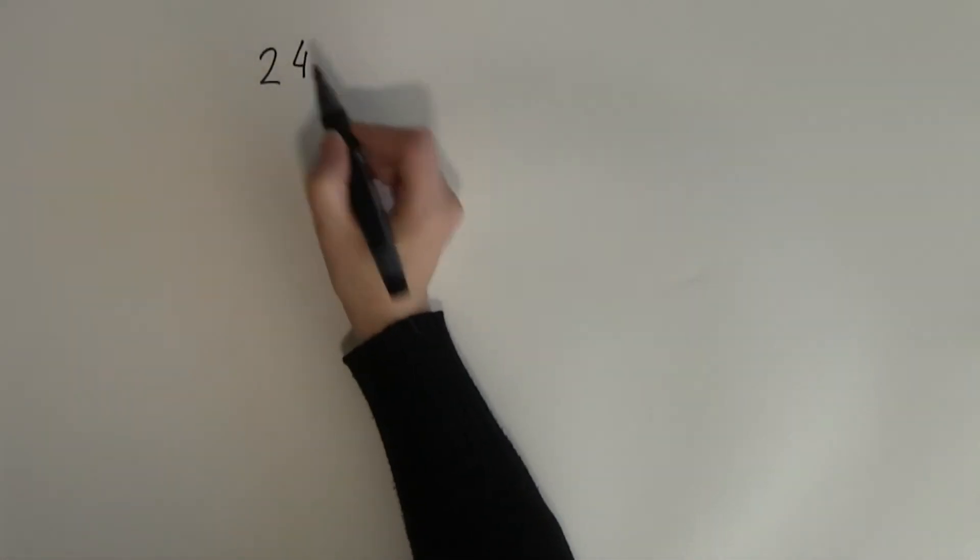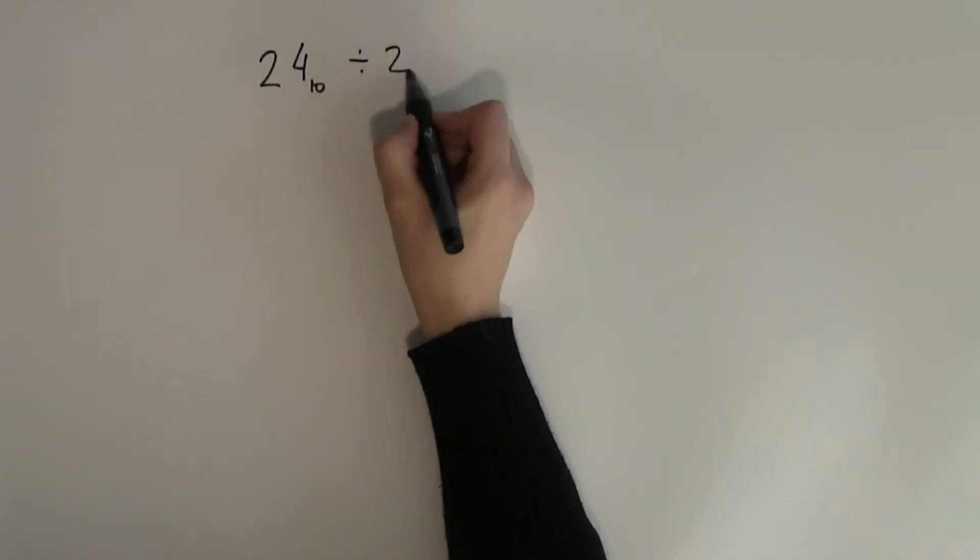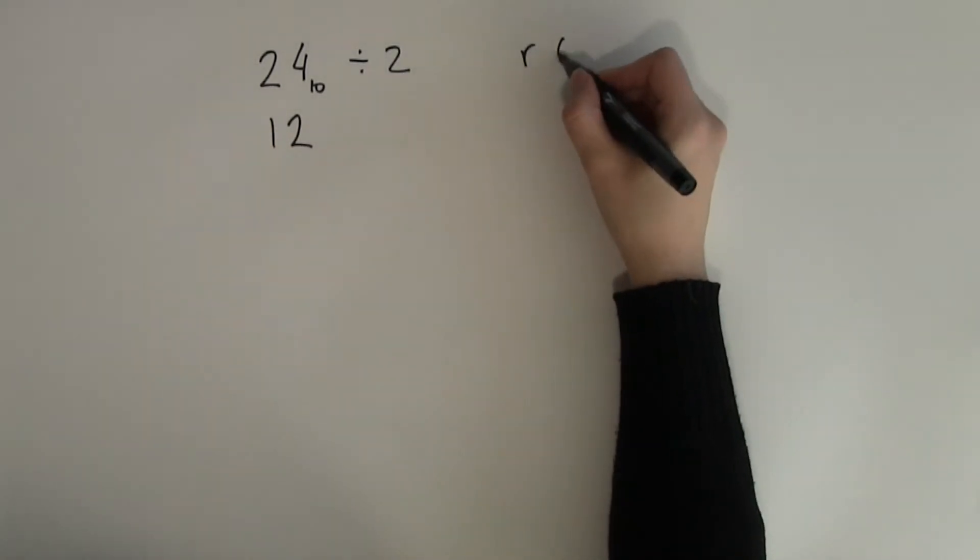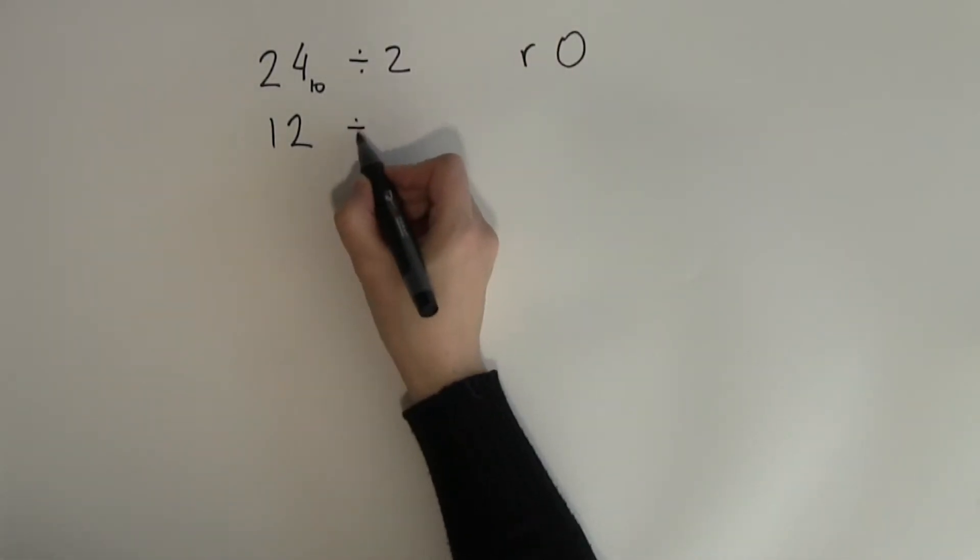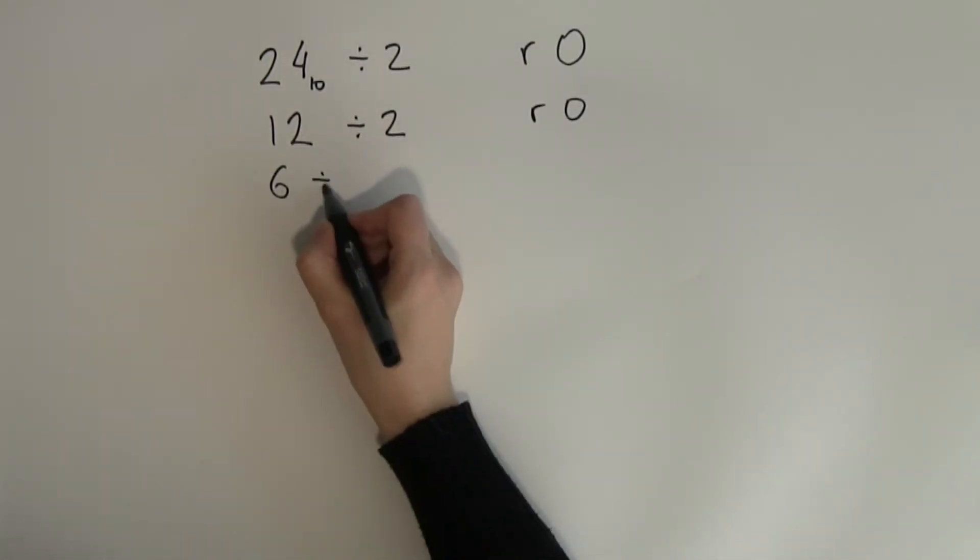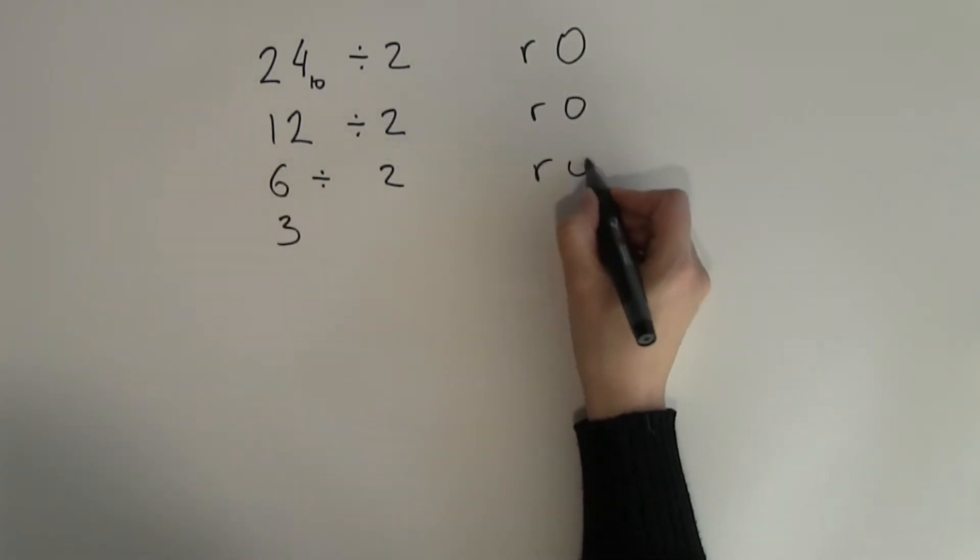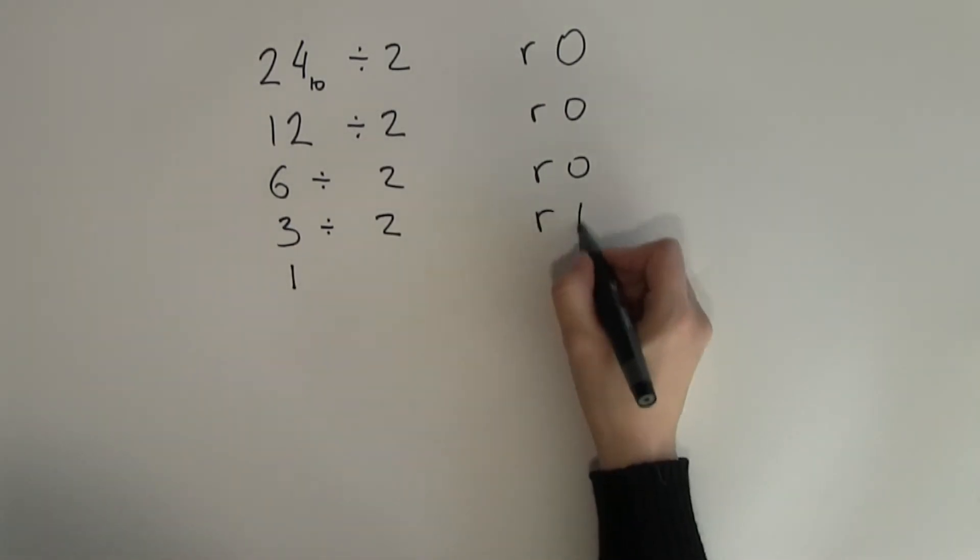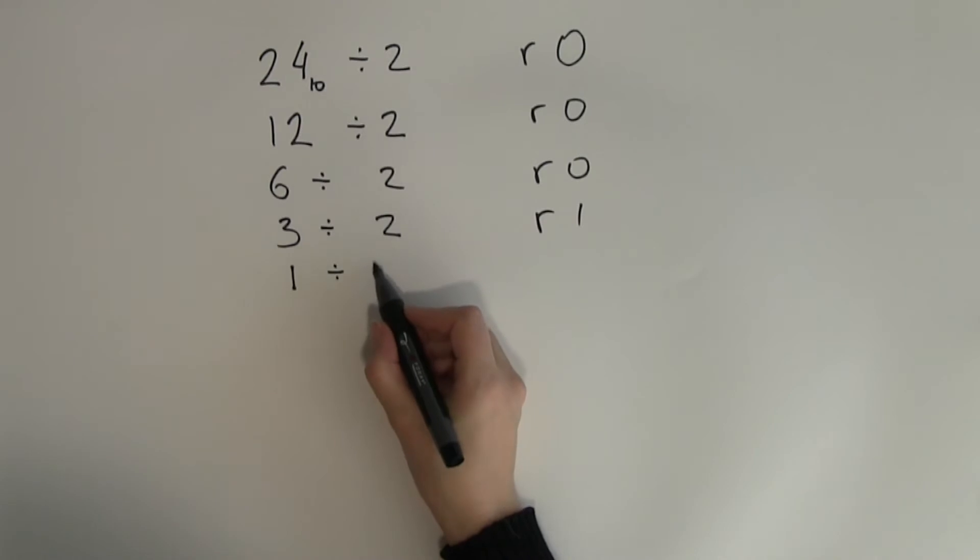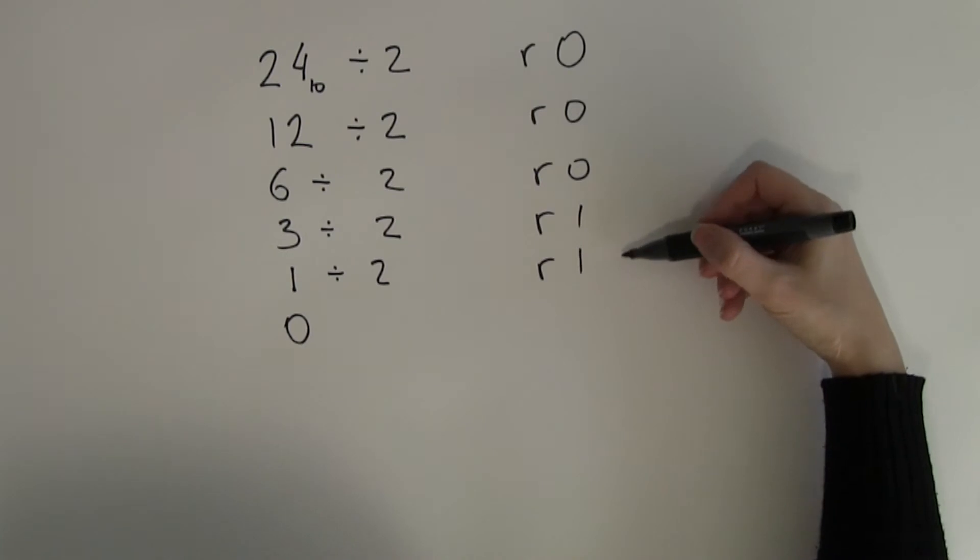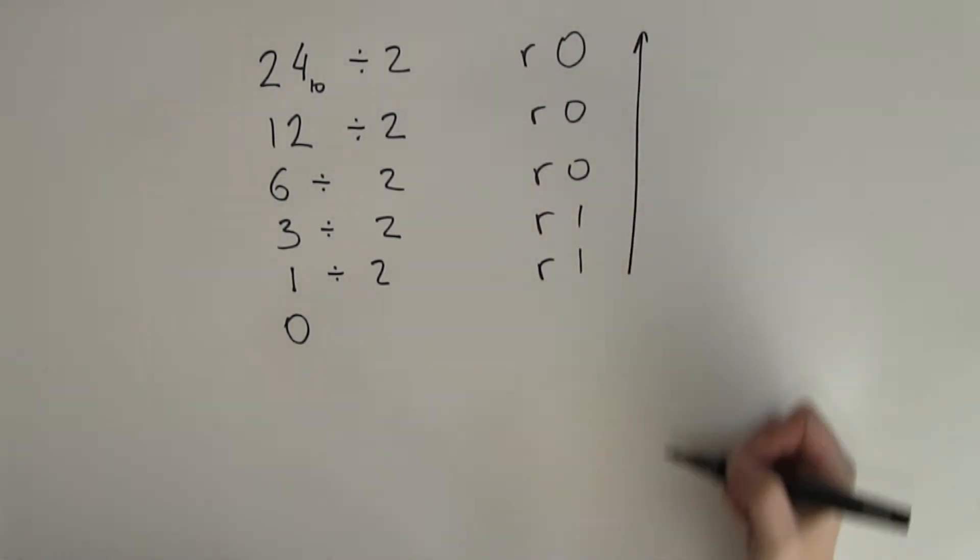Let's look at the next example, 24. What is 24 divided by 2? 24 divided by 2 gives me 12 and in this case I've got no remainders. Again 12 divided by 2 gives me 6 no remainders. 6 divided by 2 gives me 3 no remainders and 3 divided by 2 gives me 1 remainder 1 and don't forget the last step 1 divided by 2 gives me 0 and the remainder is 1. Again copy the digits bottom up.